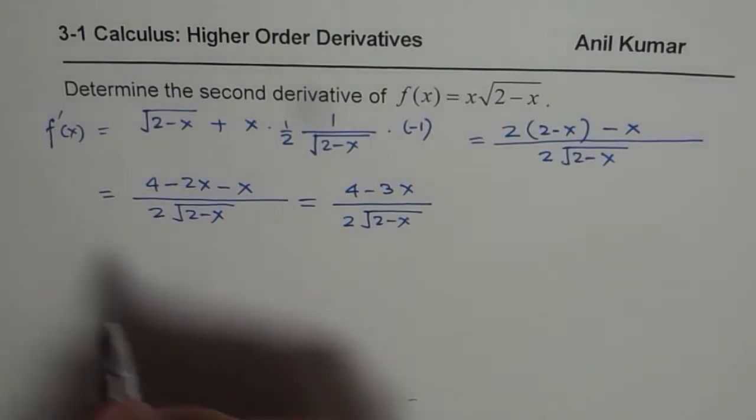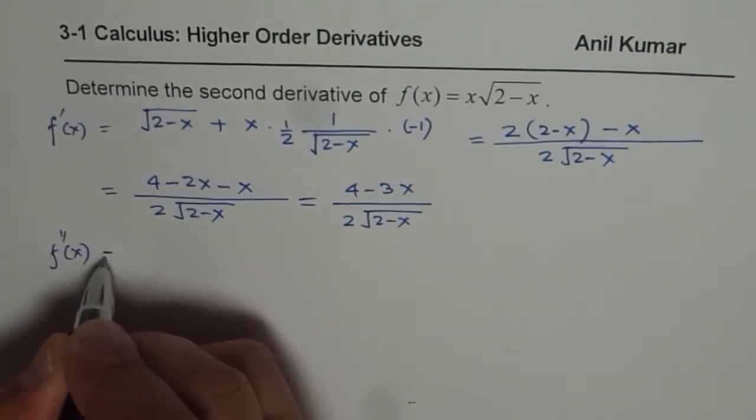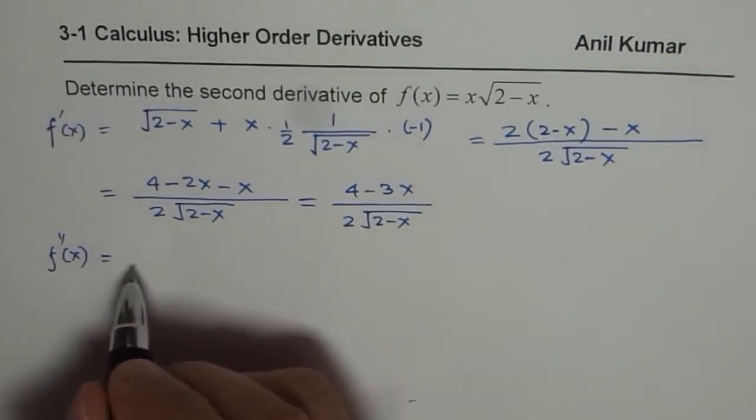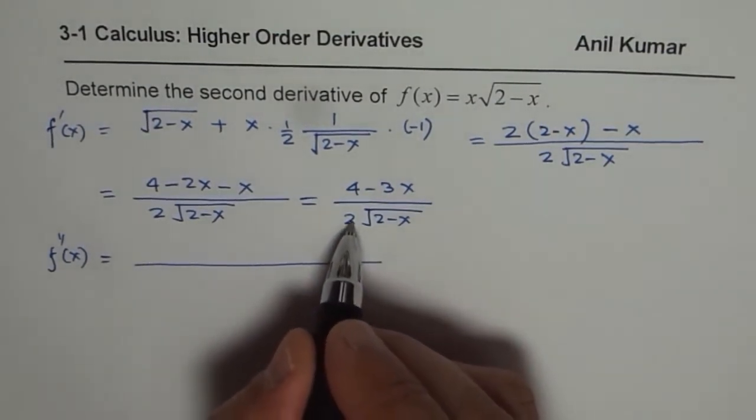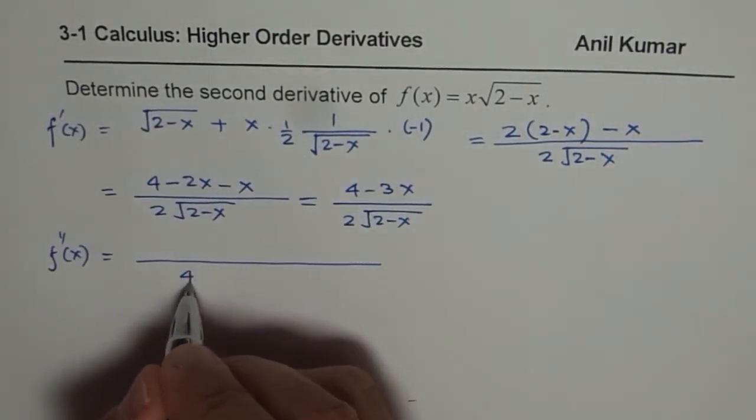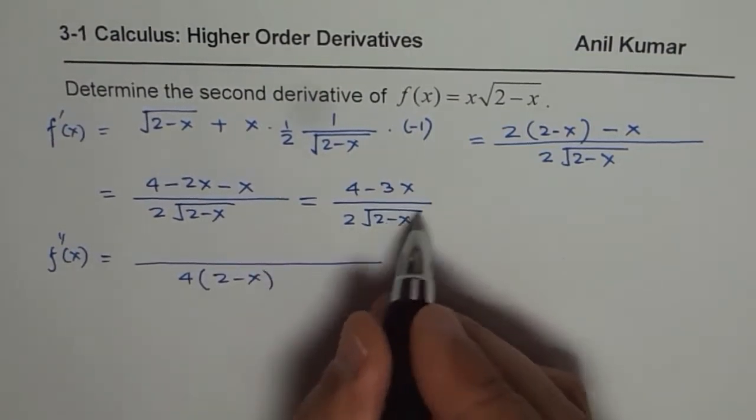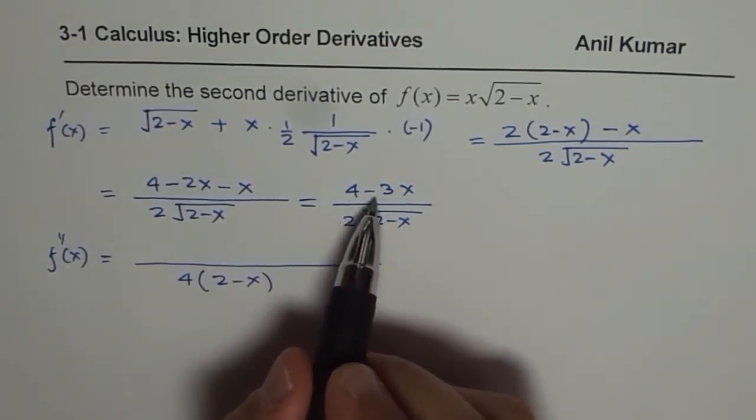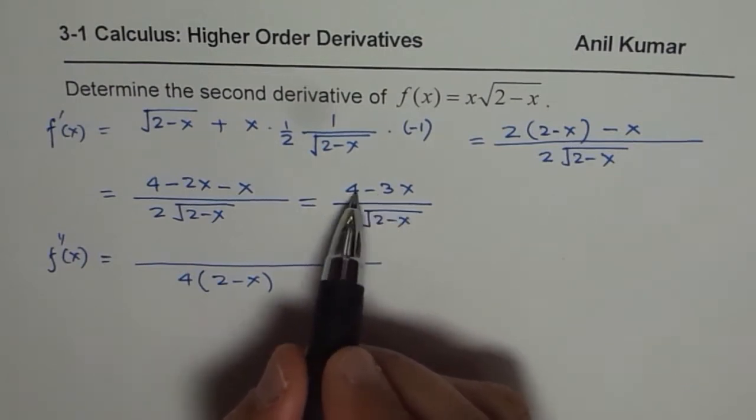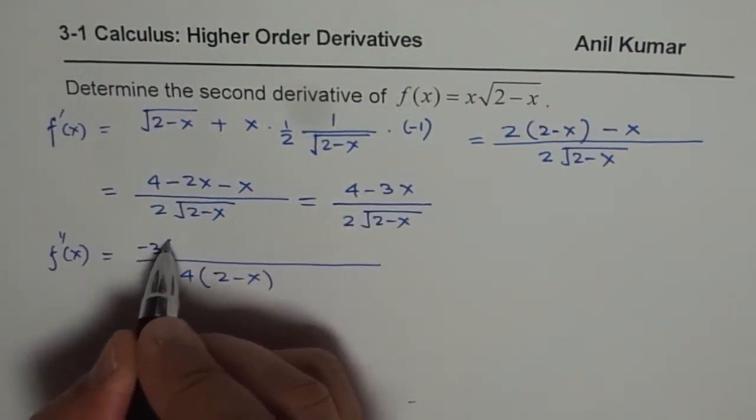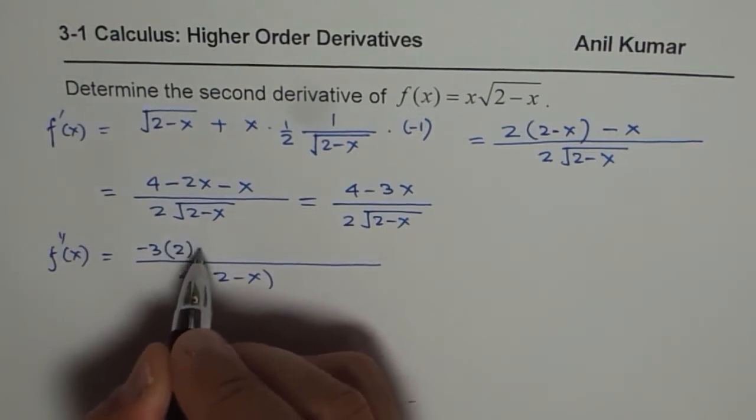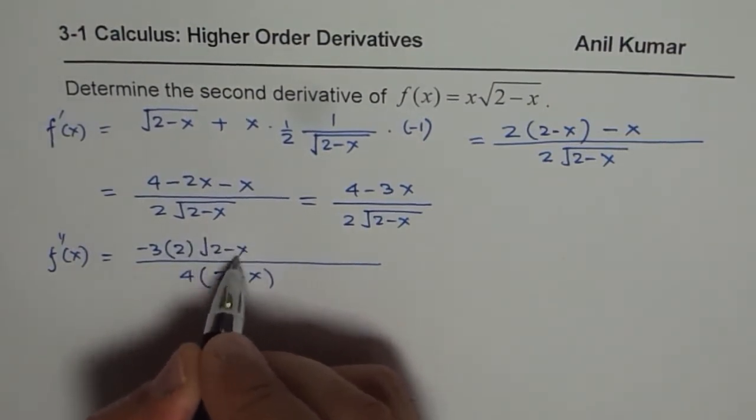Now for the second derivative, we will begin with the first derivative. We will apply the quotient rule, that means square of the denominator which is 4 times 2 minus x. Now in the numerator, we have 4 minus 3x, derivative of this is minus 3, so minus 3 times 2 times square root of 2 minus x.